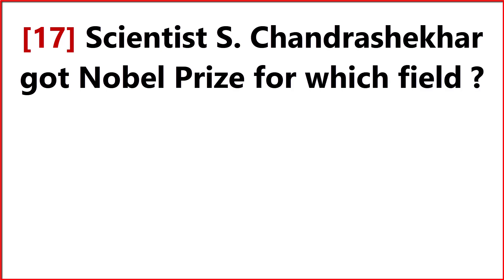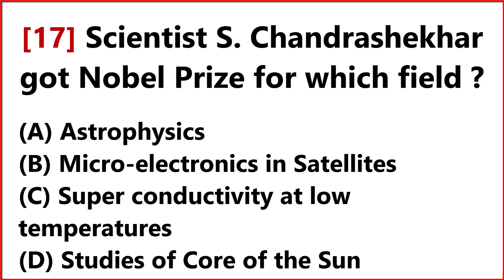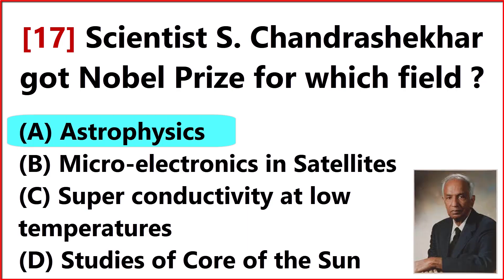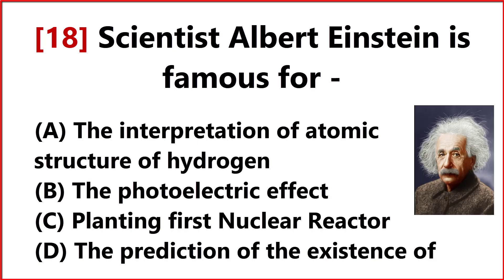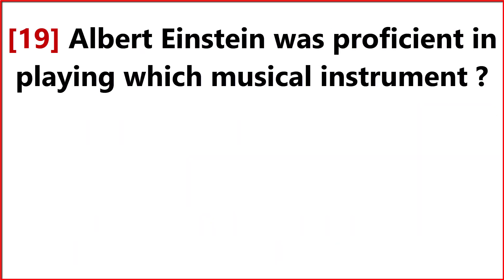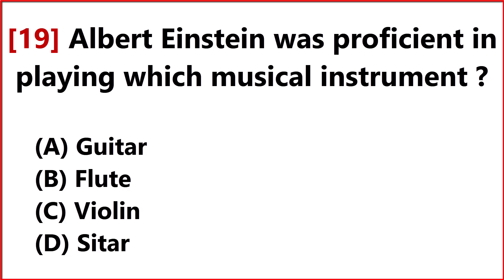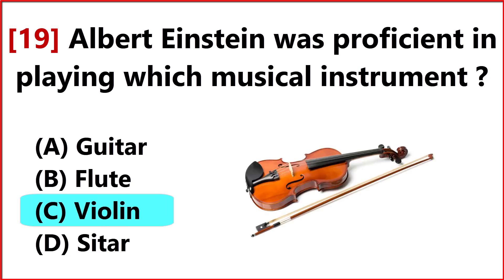Scientist S. Chandrasekhar got the Nobel Prize for which field? Answer Option A: Astrophysics. Scientist Albert Einstein is famous for Answer Option B: the photoelectric effect. Albert Einstein was proficient in playing which musical instrument? Answer Option C: Violin.